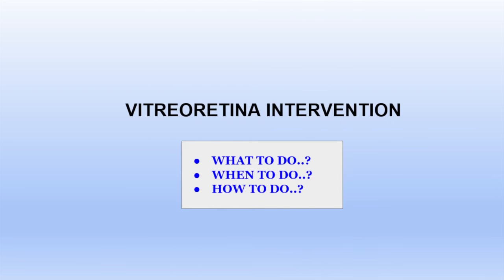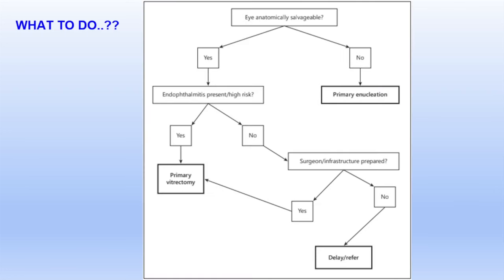Moving to the role of the vitreoretinal department in management of open globe injuries: the three key questions are what to do, when to do it, and how to do it. A flowchart guides decision-making for severely injured eyes. First, determine whether the globe is anatomically salvageable. Primary enucleation is considered for non-salvageable eyes. If salvageable with risk of endophthalmitis or a foreign body, primary vitrectomy should be considered as a combined procedure with primary globe repair, provided infrastructure and surgeon expertise are adequate.